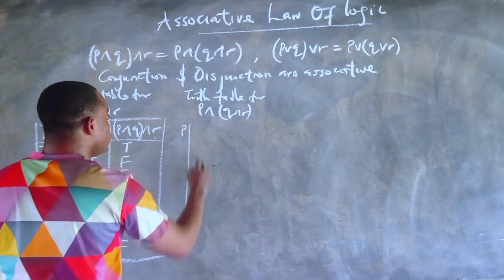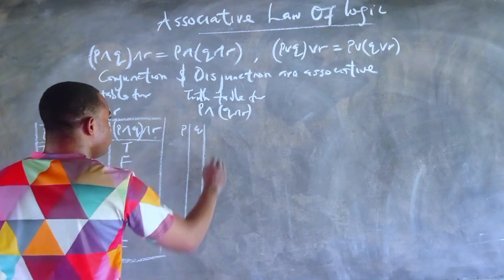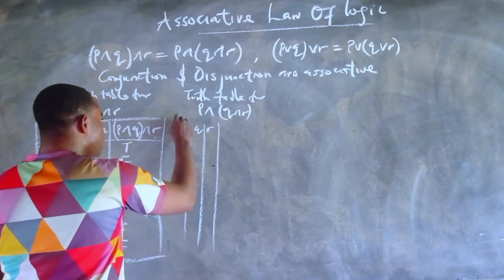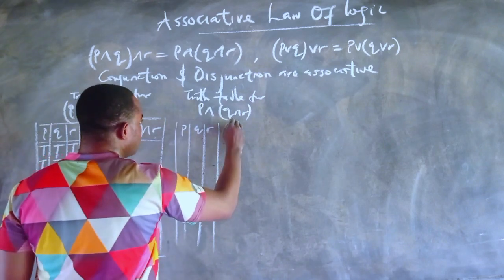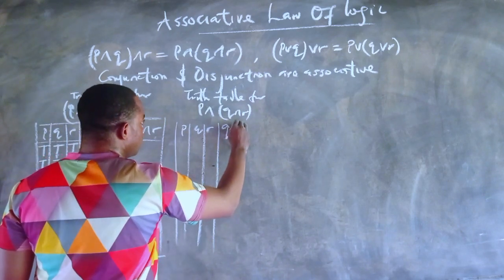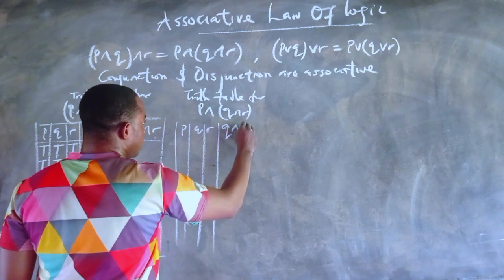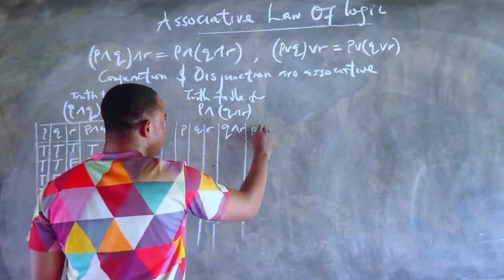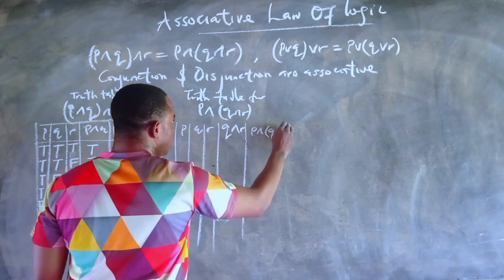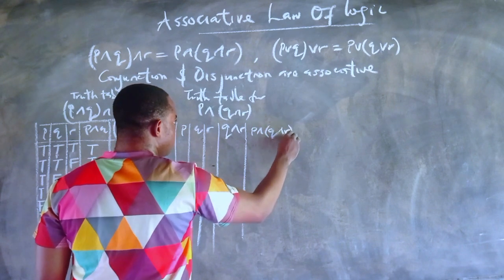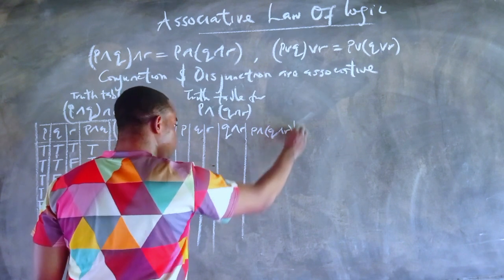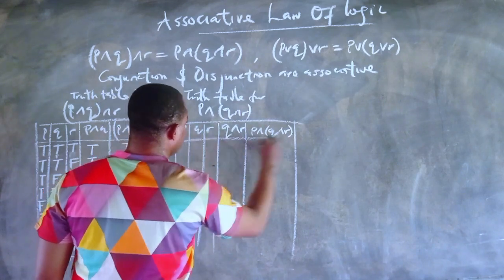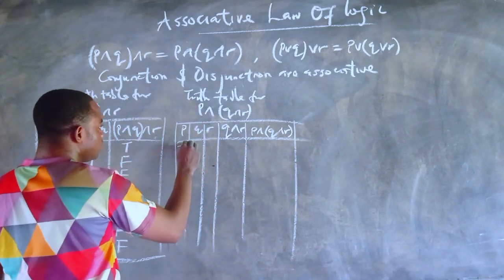Now let's obtain the truth table for the second statement. On that table we are going to need P, Q, R, and Q and R. We would also need the compound statement in question: P and (Q and R).